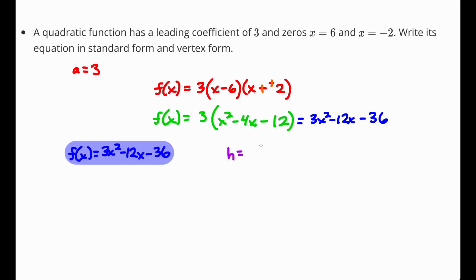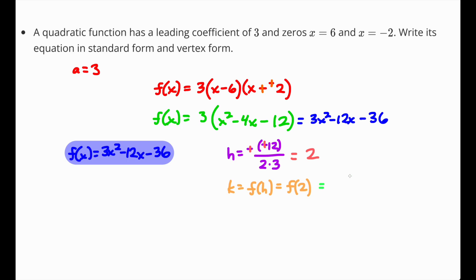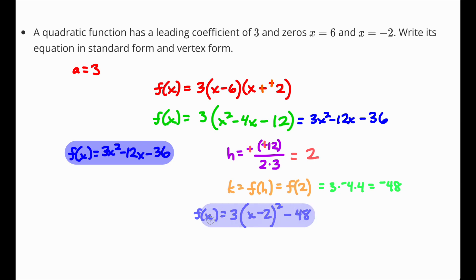For vertex form, find h: negative b over 2a equals negative of negative 12 over 2 times 3 equals 12 over 6 equals 2. Then k equals f of 2: using factored form, 3 times negative 4 times 4 equals negative 48. So the vertex form is f of x equals 3 times x minus 2 squared plus negative 48, which is 3 times x minus 2 quantity squared minus 48.